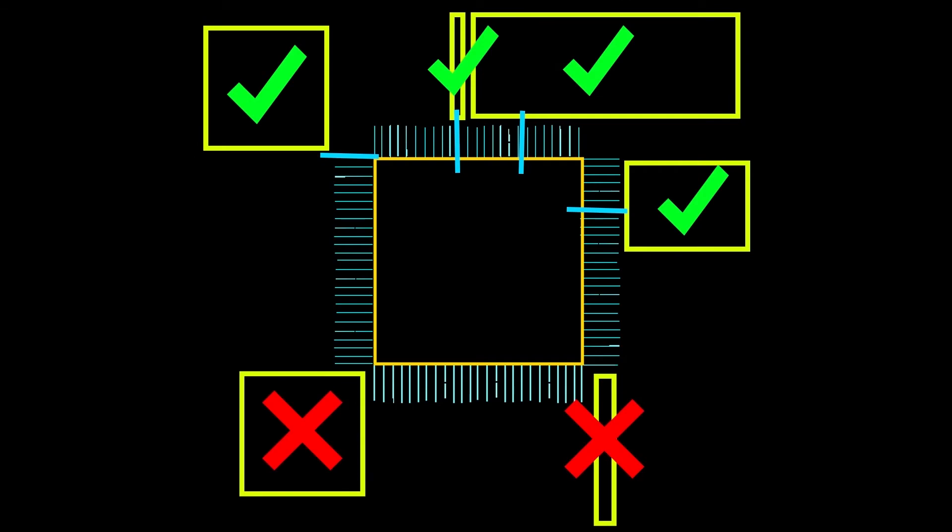For a navmesh to be correctly aligned, think of a CPU icon. Think of each line as a point that a navmesh can connect to. If the navmesh is not on any of the lines, then you cannot connect the two.